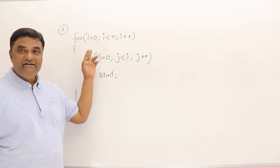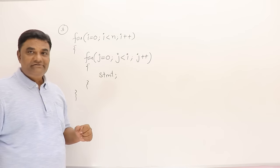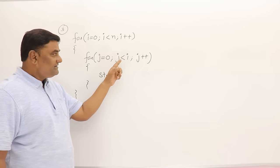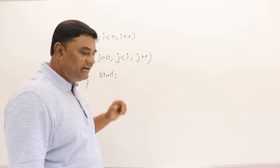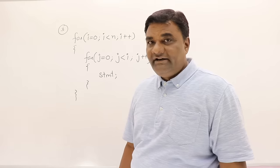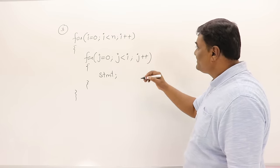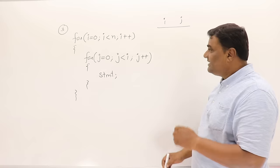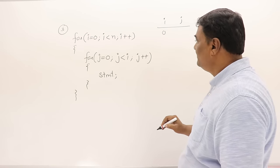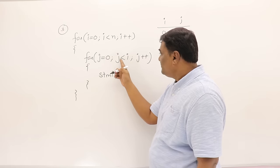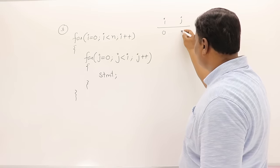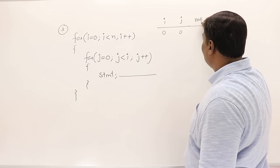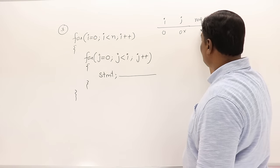The next is again a nested for loop that looks similar to the previous one, but notice: i goes from 0 to less than n, but j goes from 0 to less than i — that is the difference. Let us analyze this by tracing to find out how many times the inner statement executes. Initially i is 0; j starts from 0, and 0 is not less than 0, so the statement executes 0 times.